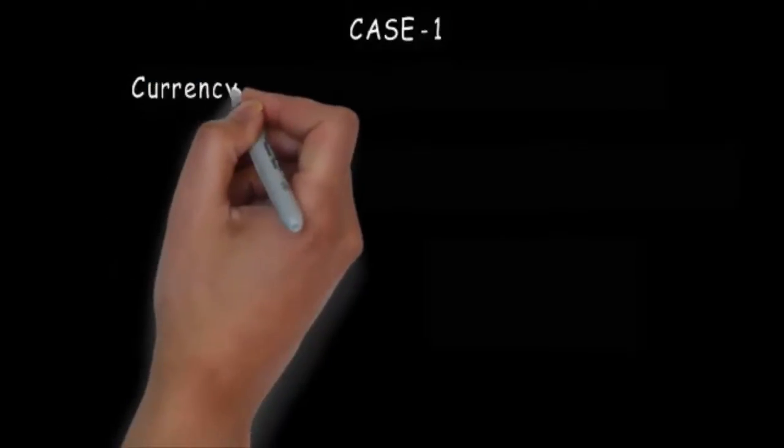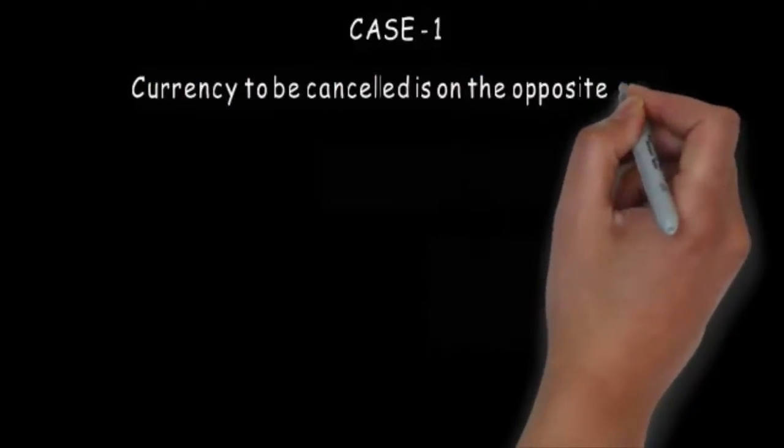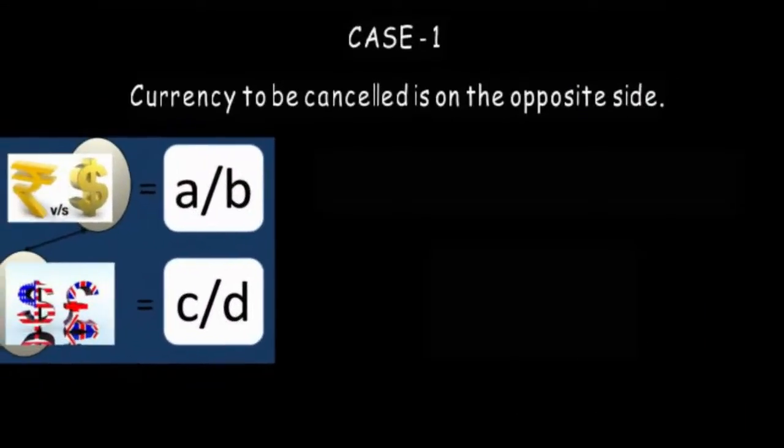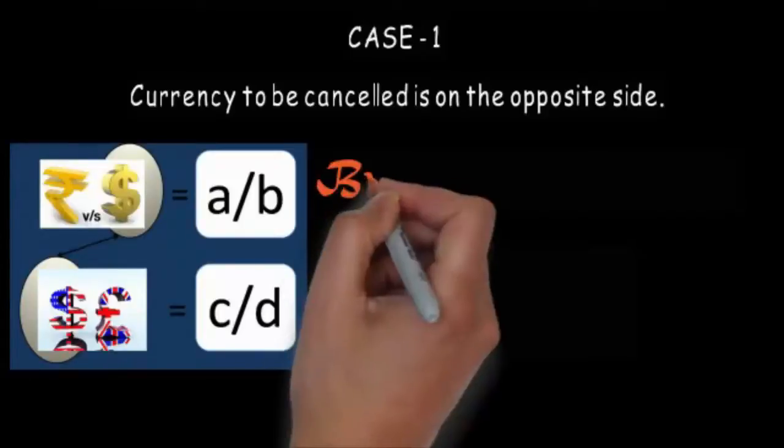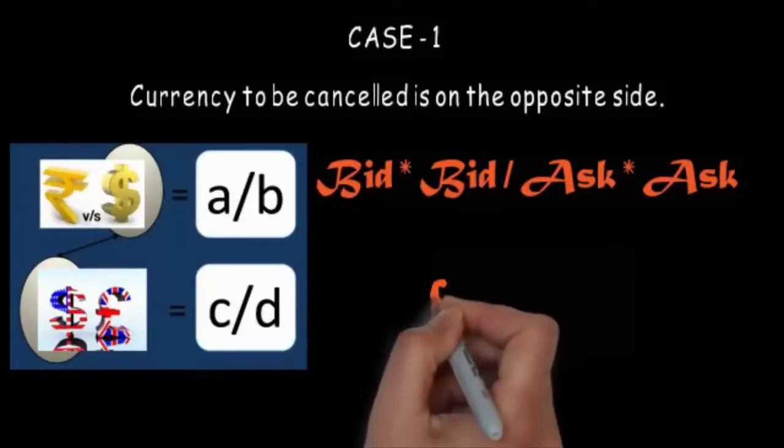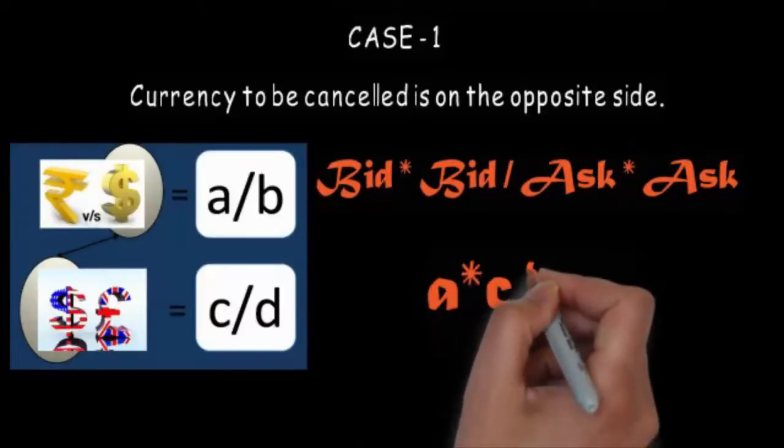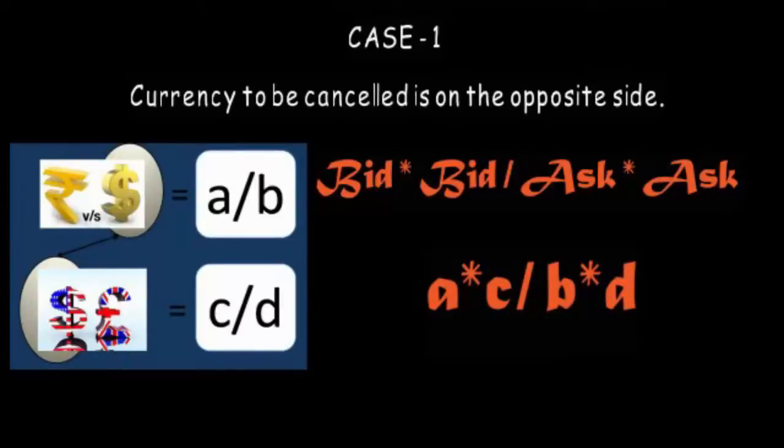Now moving further, there may be two possible cases. Case 1, that is when the cancellation currency or the currency to be cancelled is on the opposite side. Now in this picture, you can see that in the above, the rate is given of dollar, and in the below one, the rate is given of the pound. That is, they are on the opposite direction. So the formula is bid multiply by bid by ask multiply by ask. That is E multiply by C by P multiply by D.